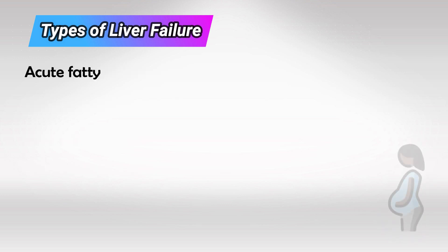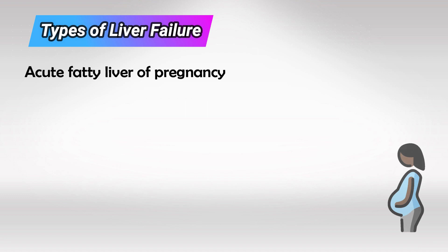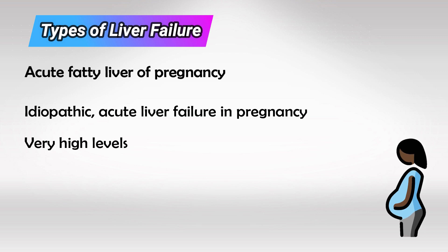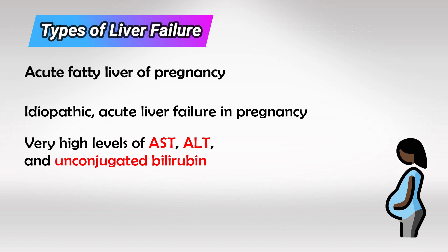The other condition associated with pregnancy is acute fatty liver of pregnancy. This is an acute and severe fatty liver failure that occurs in pregnancy and we don't know the cause. The patient will have severe abdominal pain with all the symptoms of liver failure. The levels of AST and ALT will be skyrocketing, and unconjugated or indirect bilirubin will also be high because the liver is not working and doesn't conjugate the bilirubin.